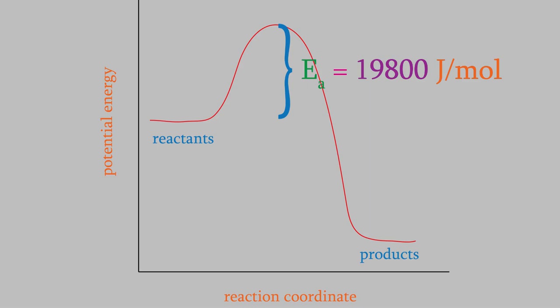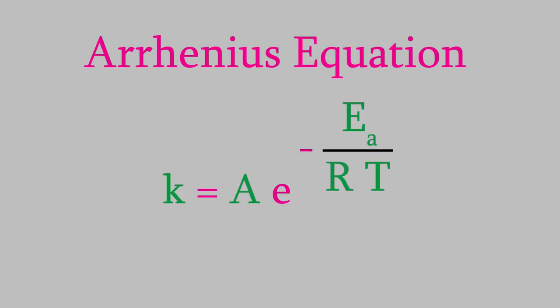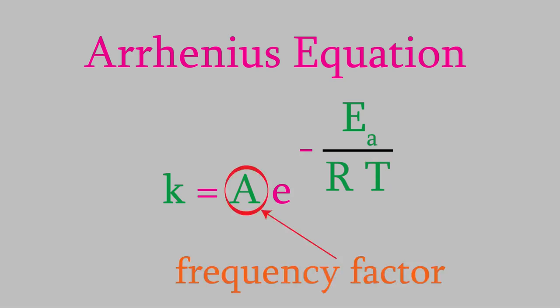As we saw earlier, if the molecules don't have enough energy, we can give the molecules more energy by raising the temperature. That's what we'll want to do next — find out how changing the temperature changes the rate of the reaction. Notice that k depends on T, the temperature. So, we can calculate how k changes when we change the temperature. Unfortunately, in order to use this equation, we must know the value of A, which is called the frequency factor. Every chemical reaction has a different value for A, and these can be very difficult to measure. It would be great to have an equation that allows us to calculate k at different temperatures without having to know A. Luckily, we can do that if we're clever with our math.